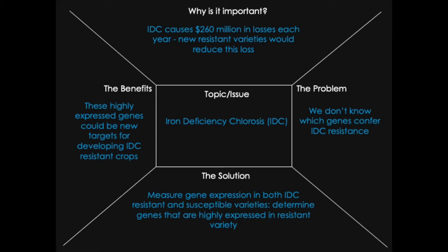What is the problem? We don't know which genes confer IDC resistance. What is the solution to this problem? The solution could be to measure gene expression in both IDC resistant and susceptible varieties, then determine genes that are highly expressed in the resistant variety. What are the benefits? These highly expressed genes could be new targets for developing IDC resistant crops.